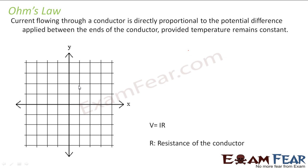So what he actually did: he had set up a circuit and he kept on increasing the potential difference between the ends of the conductor and kept measuring currents for different values. Then he plotted a graph where he took voltage along the x-axis and current along the y-axis, and he found that the line obtained showed that current is directly proportional to the potential difference.